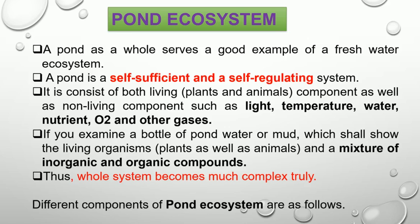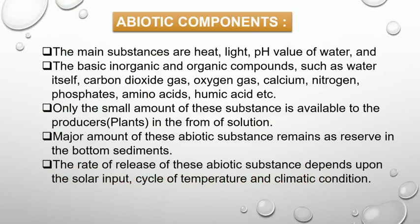The different components of pond ecosystem are as follows. The abiotic components of the pond ecosystem are formed as a result of a mixture of some organic and inorganic material. They have a direct or indirect effect on aquatic organisms of the pond. They include light, temperature, heat, dissolved oxygen, carbon dioxide, other gases, pH of water, turbidity, dissolved minerals, amino acid and humic acid. The rate of release of these abiotic substances depends upon the solar input, cycle of temperature and the climatic conditions.